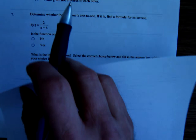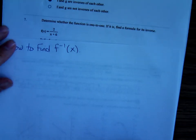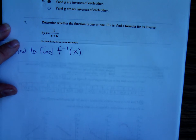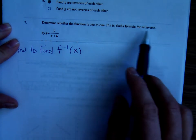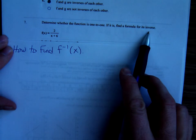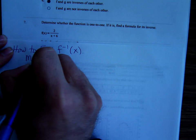I'm telling you how to do something like number 7 here, which says determine if it's one-to-one. If it's one-to-one, find a formula for its inverse. First of all, to find that inverse, you make sure f is one-to-one.